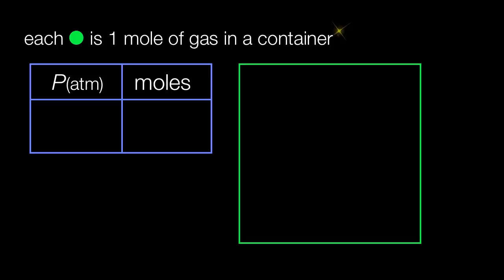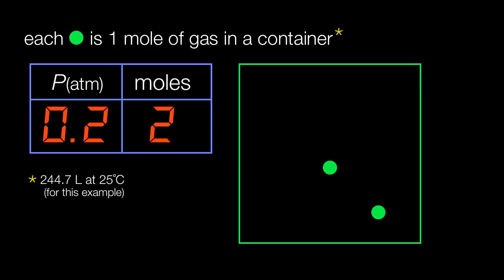So we're going to first start with a container here. If you need to know what the container size is and the temperature, we'll go ahead and give you that: 244.7 liters at 25 degrees C. Now we're going to put one mole into this container, and we get 0.1 atmospheres of pressure. We're going to then double this up to 2 moles, and we're going to get 0.2 atmospheres of pressure.